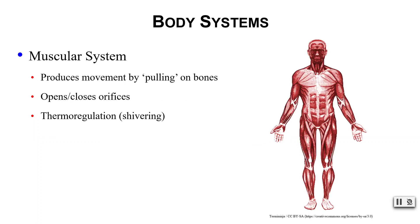Your muscular system is involved in movement by pulling on the bones of the skeletal system. Your muscles also help open and close orifices such as your mouth. And again we see thermoregulation — but now we're talking about shivering instead of sweating. So notice we have two different body systems that help us regulate body temperature.